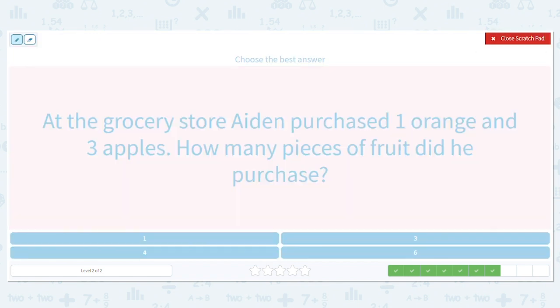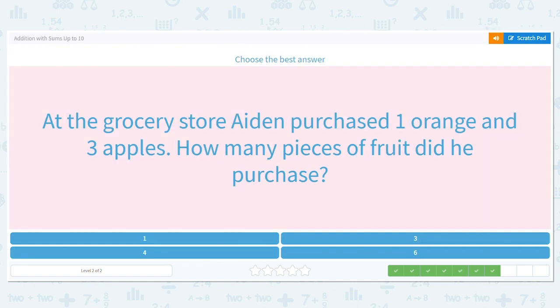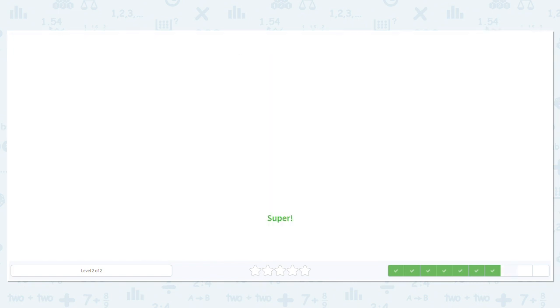Okay. We want to know how many pieces. So what are we doing? Adding or subtract? And we're adding one orange and three apples. So my addition sentence is one plus three equals what? Four. So there were four total pieces of fruit that he bought.